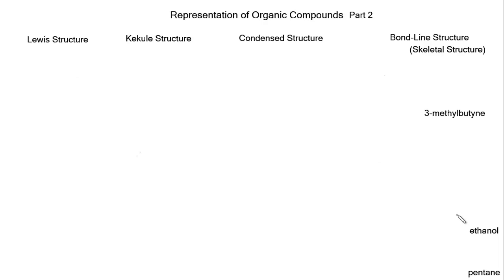Just a reminder for the bond line structure for ethanol, we've got CH3, CH2, and OH. For the bond line structure you don't have to draw lone pairs or bonds, but I recommend that you do. So there's two lone pairs on this oxygen and then a bond between the oxygen and hydrogen. For pentane we have a five-carbon chain: carbon one, two, three, four, five. So there's our pentane, which is an alkane.